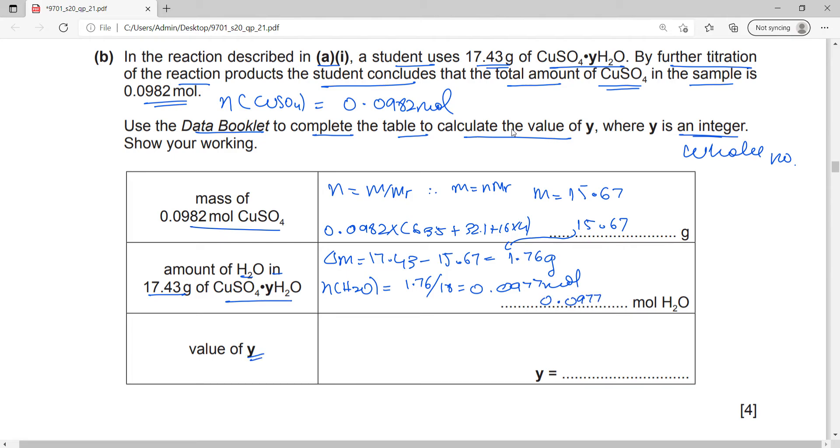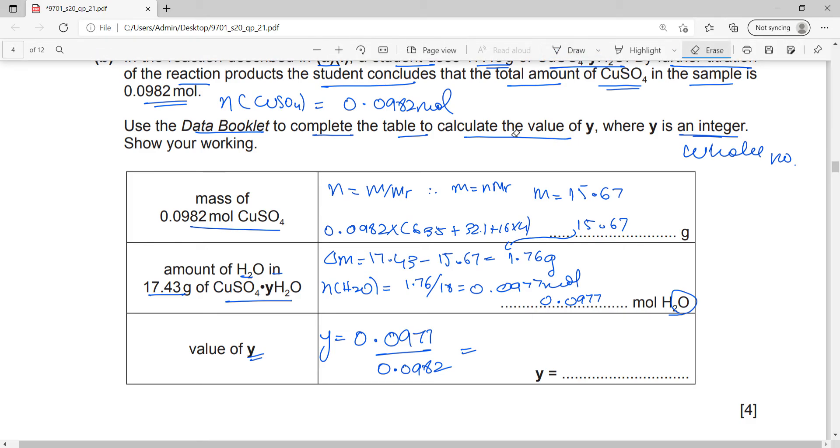Now, find the value of Y, the final value. How would you find out the value of Y? Well, it is just the ratio of the moles of H2O and the moles of copper sulfate. So Y is equal to 0.0977 divided by 0.0982. And your answer won't be exactly 1, but if you round it in integer form, it will be 1. Because it's an integer, you don't really have to pay attention to the significant figures. Let's write 1.